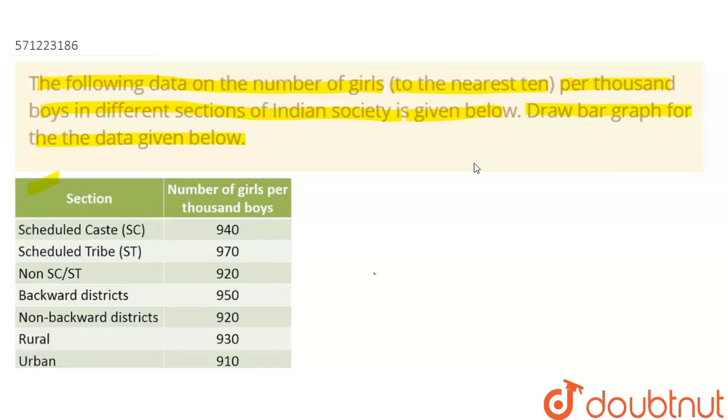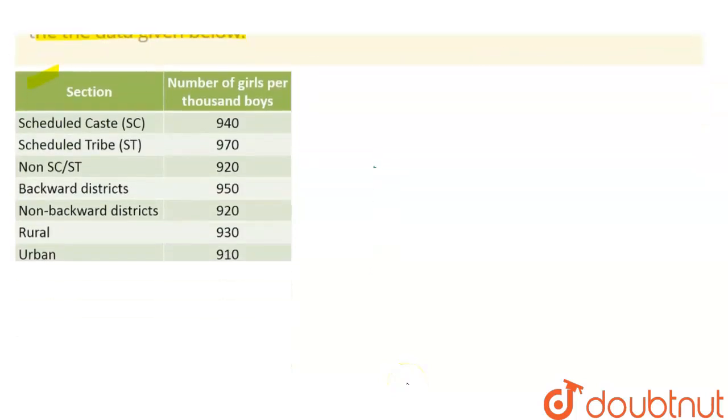So here the data is given: the number of girls per thousand boys for SC category is 940, ST 970, SC/ST 920, backward districts 950, non-backward 920, rural 930, and for urban it's 910. So let's make our bar graph for this. Let's start.